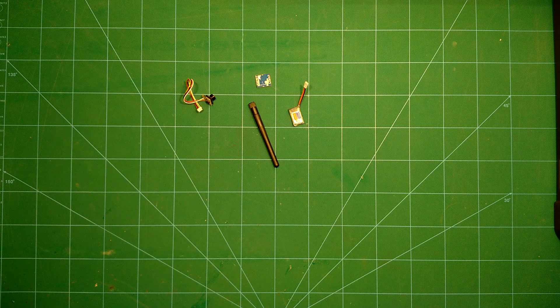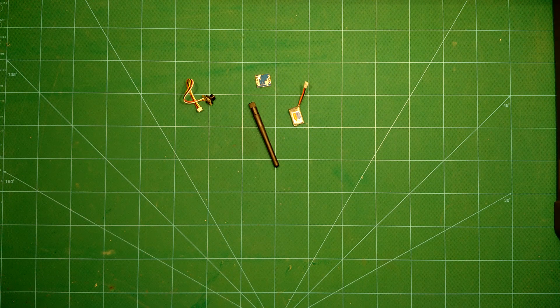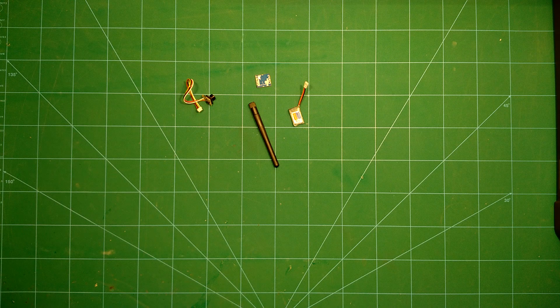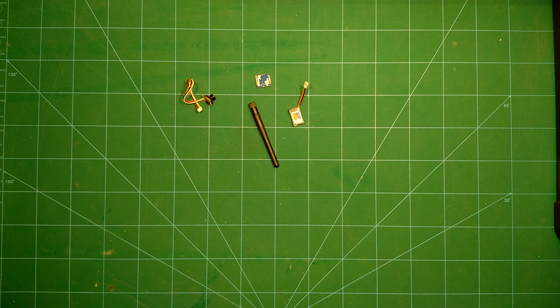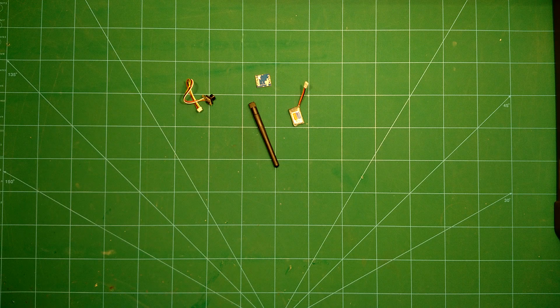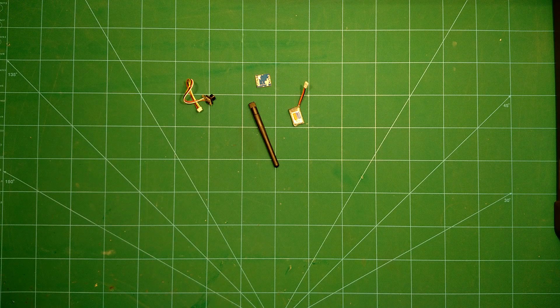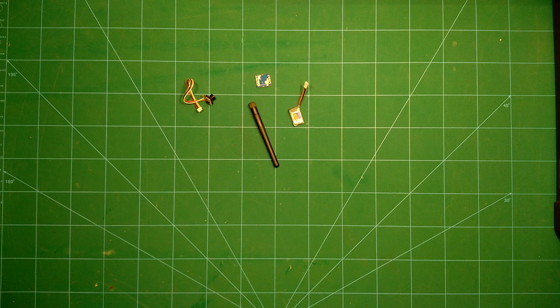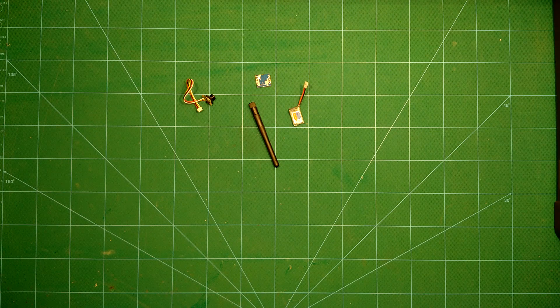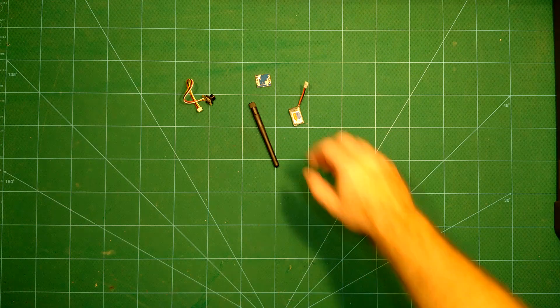Hi guys and welcome back. Today I will show you how to build a micro FPV set for about 20 bucks with a weight of less than 5 grams. All the components which I will use are available from Banggood. I will put all the links in the description. So let's get started.